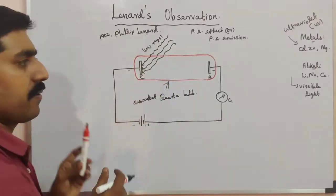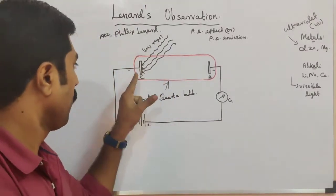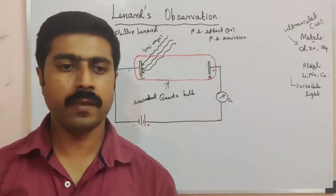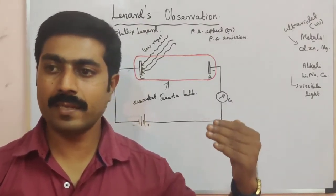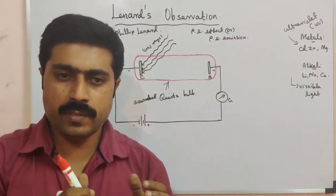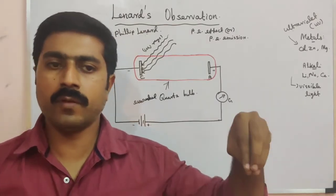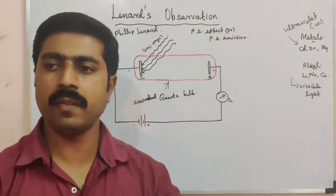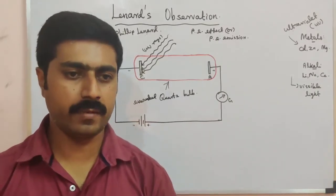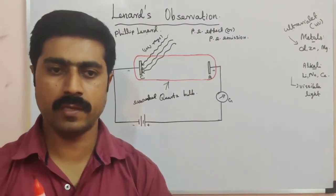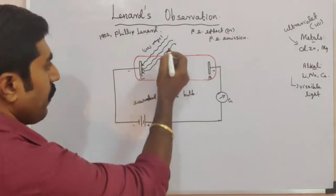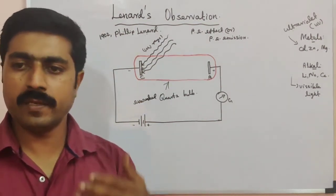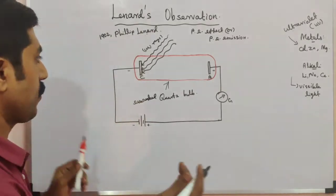When UV rays fall on the metal surface, the free electrons — that is, the outermost valence electrons — are loosely bound to the nucleus. Because the nuclear force level is lower, these free electrons move randomly inside the metal surface. But the metal surface provides a barrier. When UV rays supply energy to the electrons, the surface barrier breaks down and the electrons are emitted.